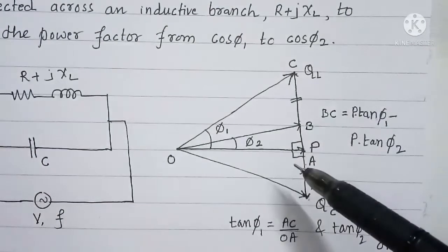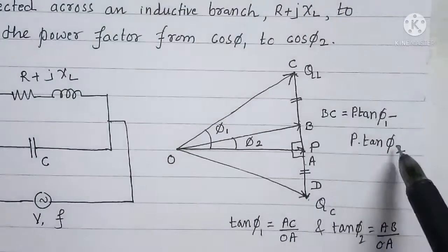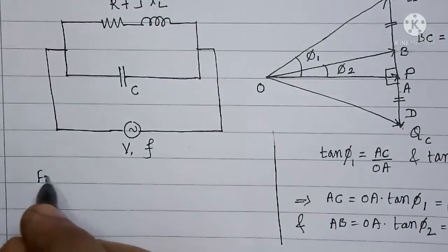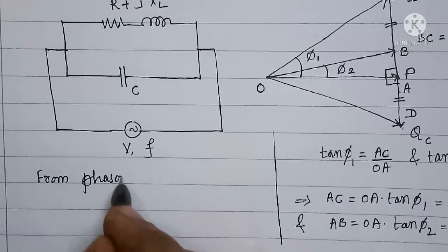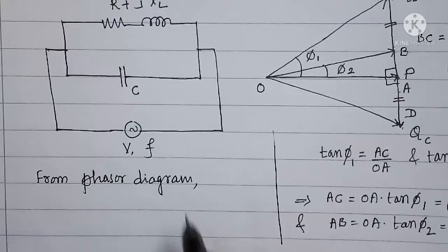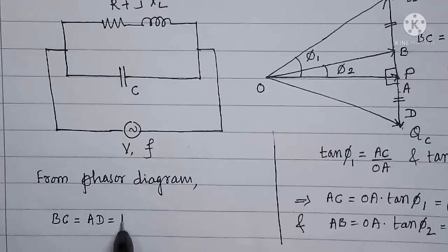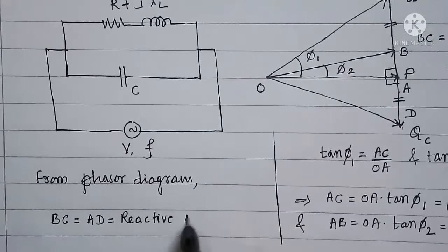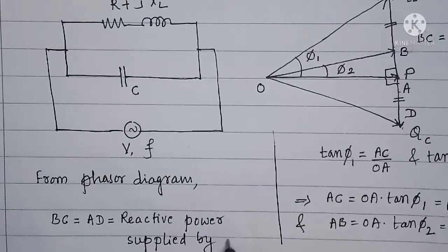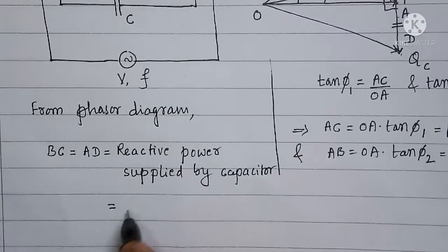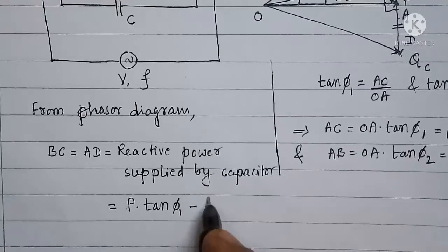Now BC will become equal to AC minus AB. But AC is P tan φ1 and AB is P tan φ2. Therefore BC = P tan φ1 − P tan φ2. From the phasor diagram, BC = AD = reactive power supplied by capacitor = P tan φ1 − P tan φ2.